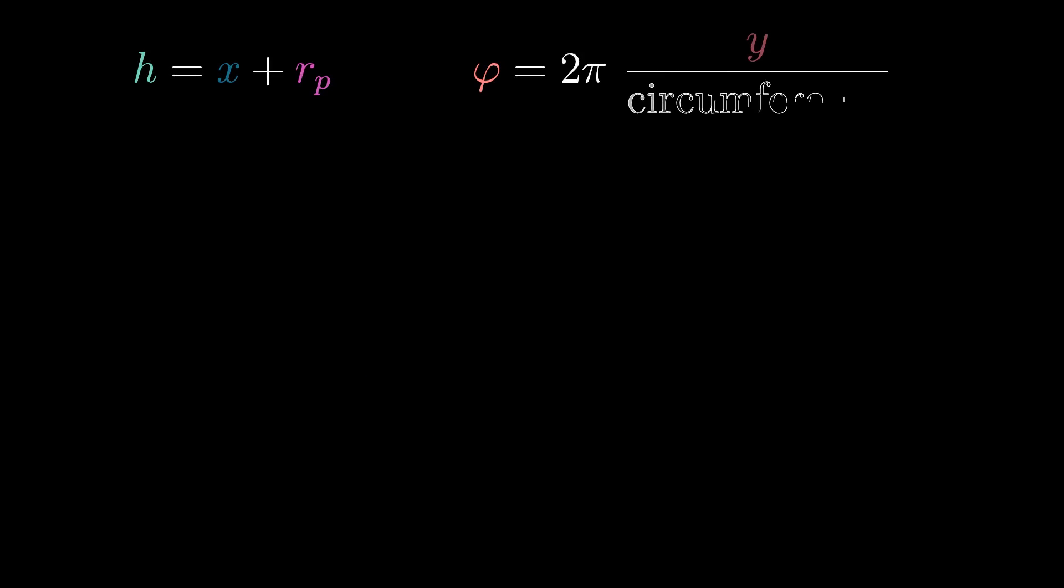Now the naive approach would be to just preserve the total height after the transformation and base the center angle on the horizontal position of the block so that distances on the circle are equal to distances on a flat plane. This means Phi will be 360 degrees or 2 pi times the fraction of the distance from the origin of the coordinate system to the total planet's circumference. Writing the planet's circumference as 2 pi times RP this gives Phi equals y over RP.